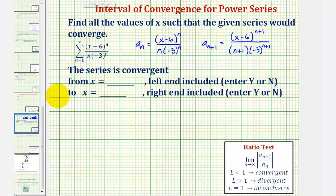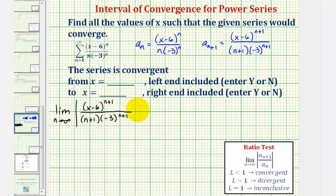For the ratio test, we would have the limit as n approaches infinity of the absolute value of a sub n plus one divided by a sub n. Instead of dividing, we'll multiply by the reciprocal of a sub n. So we first have a sub n plus one — the quantity x minus six to the n plus one — times the reciprocal of a sub n, which would be n times negative three to the nth divided by the quantity x minus six to the nth.